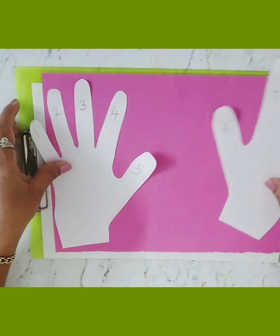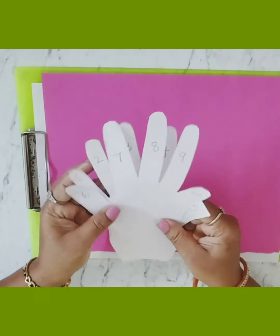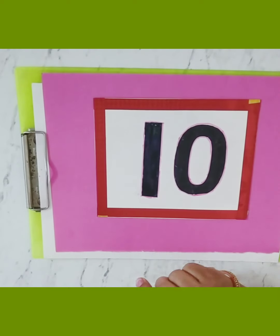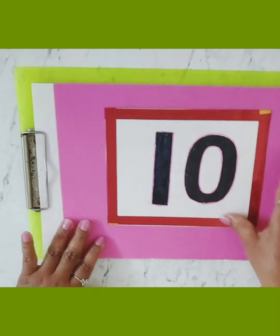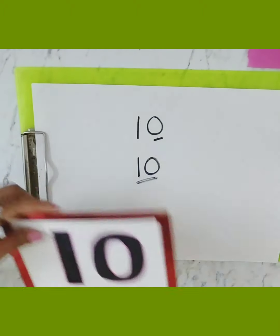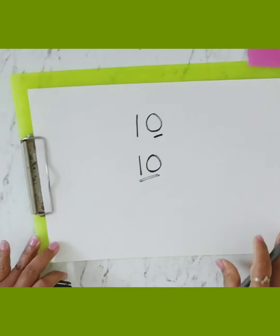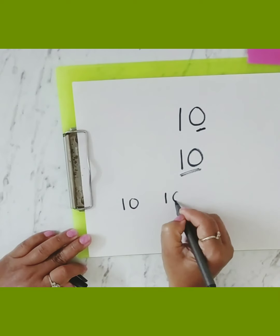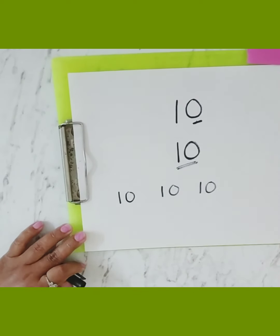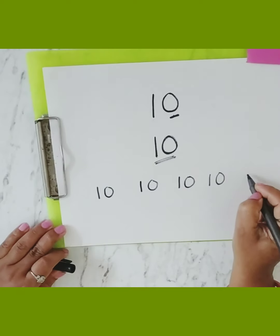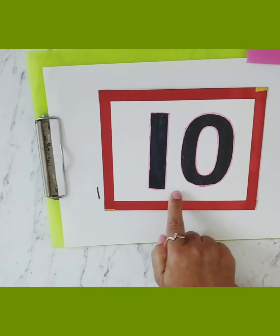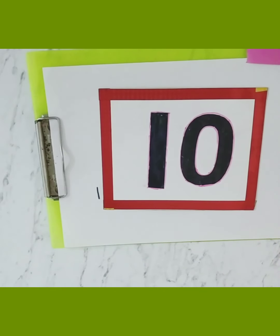So this is number ten. Easy hai na — one, zero, ten. One bhi humne seekha, zero bhi humne seekha tha, toh abhi bas one, zero, ten. Aapko freehand practice karni hai — say and write, bol bol ke practice karo: one, zero, ten. Toh aise hi number ten ki aapko practice karni hai. This is all about number ten. Do practice of number ten. Thank you and bye bye.